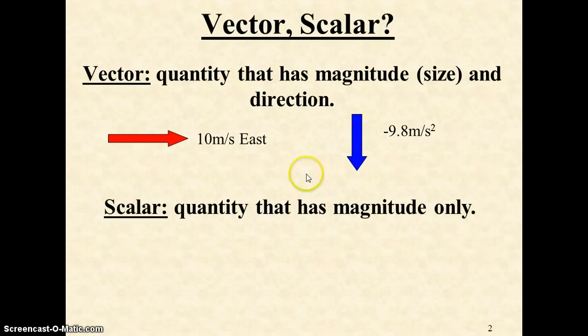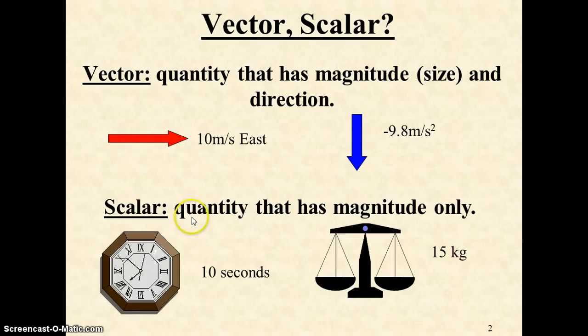On the other hand, we can have scalars, which are any type of quantity that only has size. Examples would be time and mass, 15 kilograms. You don't describe them with a direction.